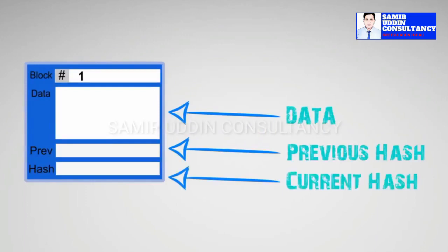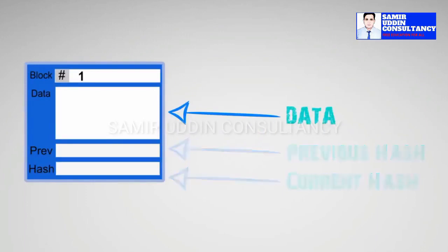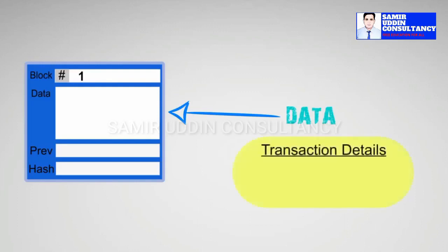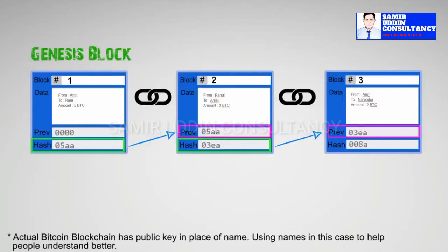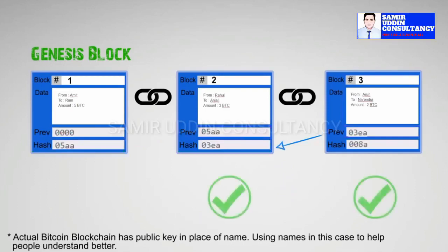Every chain is made up of several blocks, each of which comprises three basic elements. One, the information contained in the block. Two, a nonce — a 32-bit whole number. When a block is constructed, the nonce is generated at random, which then generates a block header hash. Three, the hash is a 256-bit number associated with the nonce, and it needs to begin with a large number of zeros.